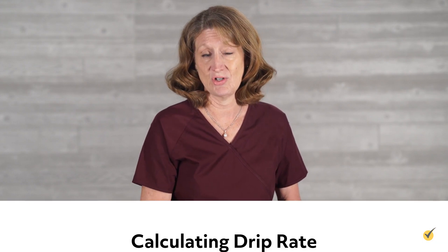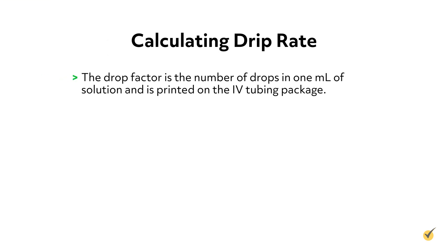When calculating the drip rate, first identify which IV tubing you will be using — micro drip or macro drip — so you can use the proper drop factor in your calculations. The drop factor is the number of drops in one milliliter of solution and is printed on the IV tubing package.